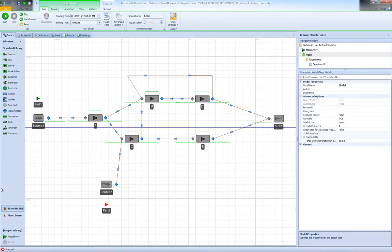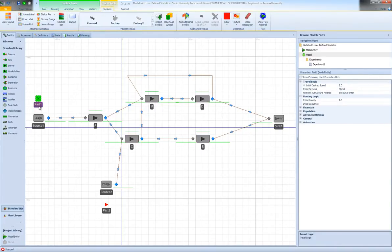So here is the initial model of our queuing network. As you can see in this model we have two part types—we have part 1 and part 2.